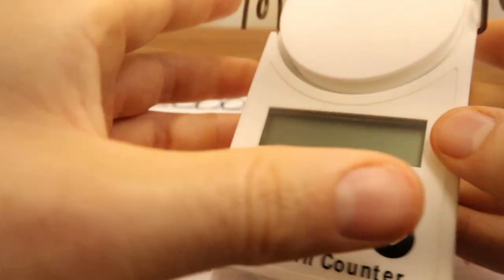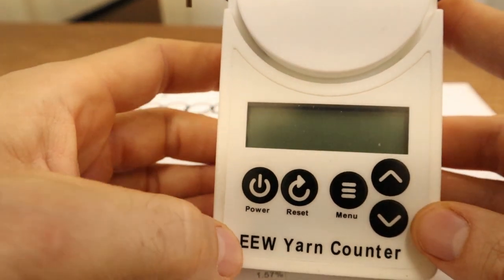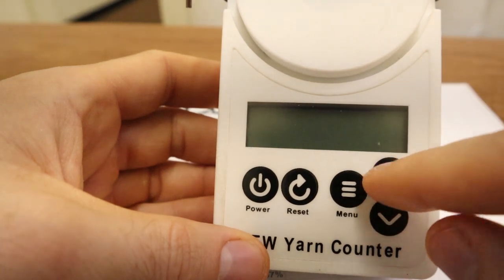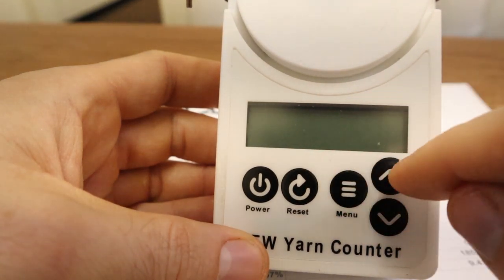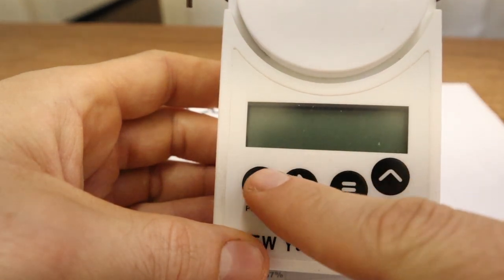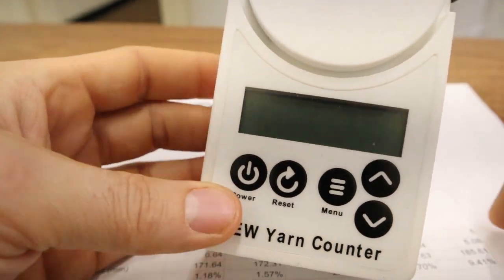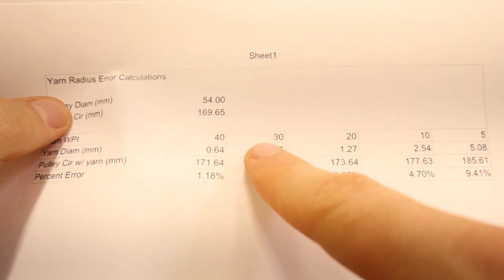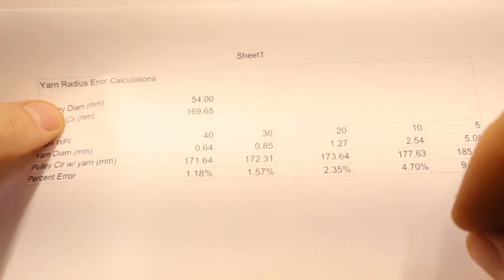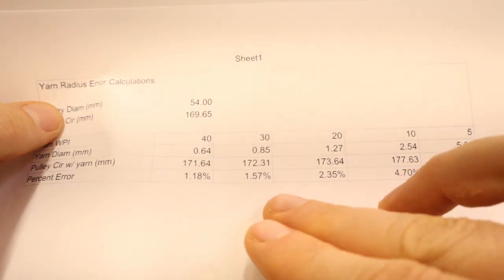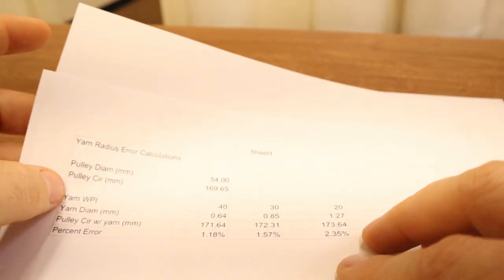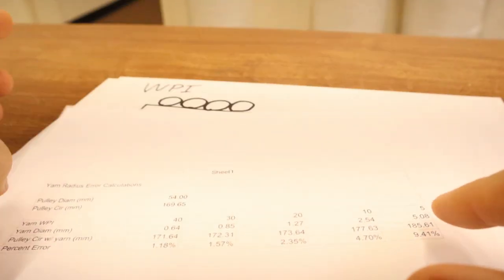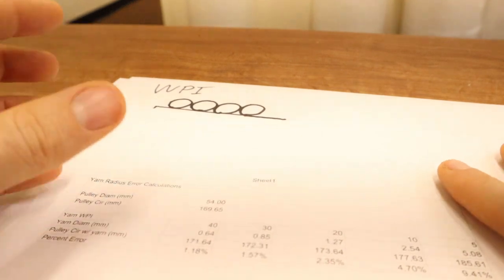This is something I could correct in software on my yarn counter. So what I would probably add is a menu option to enter in the wraps per inch of your yarn. The thing is, you don't need to get an exact wraps per inch. Even if I put just a few different wraps per inch in the menu and use that to estimate a new diameter for the pulley, I could greatly reduce the amounts of error.